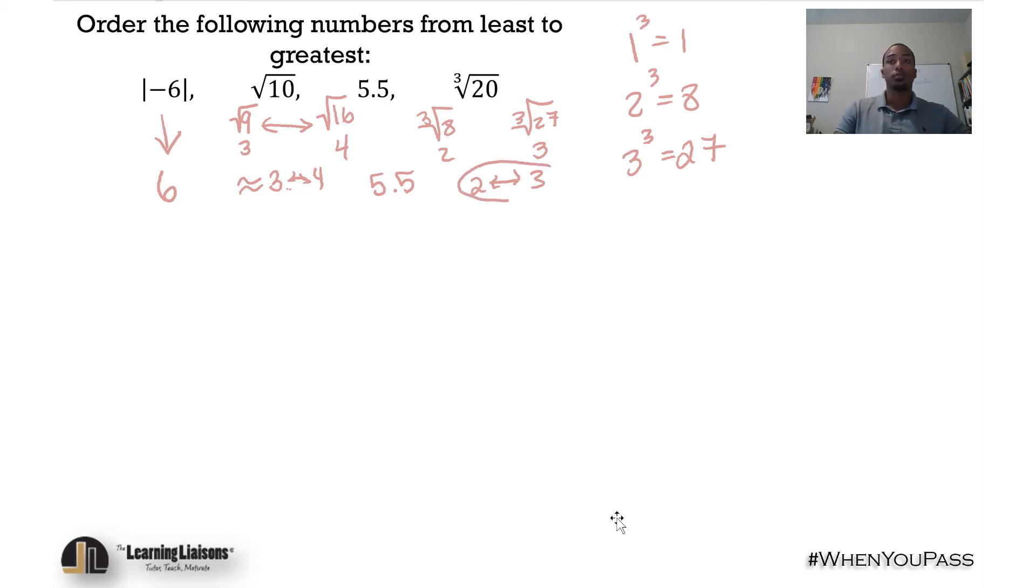Well, something between 2 and 3, that's definitely the smallest out of the four numbers, so I would say that the cube root of 20 goes first. Up next, we have something between 3 and 4, 5.5, and 6 - something between 3 and 4 is up next. Next, this is the easy part now because we have 5.5 and 6, so we can just order them as is. And the 6, remember, it was represented as the absolute value of negative 6.